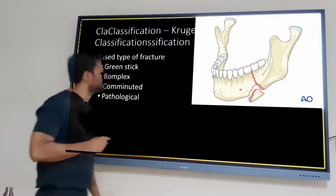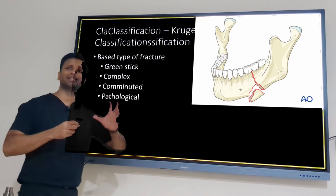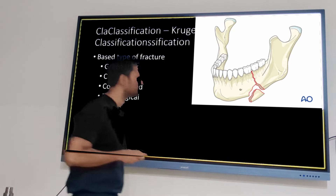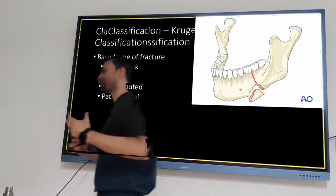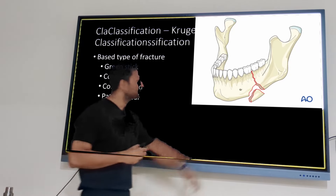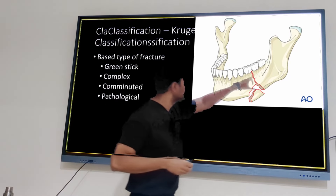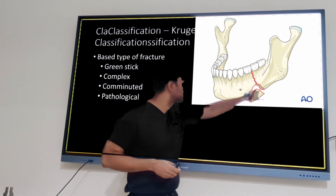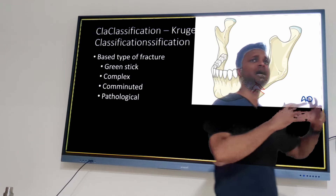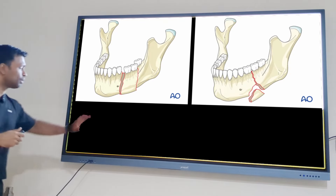Complex fracture has two definitions. For exam purposes: a complex fracture is one with associated vital structure injury. The AO organization defines a complex fracture as one where two fracture lines are seen on one side of the mandible. Both definitions should be known; for most exams, write that complex fracture involves associated vital structure injury.